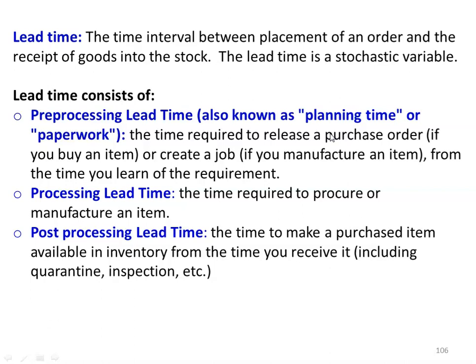Suppose you are a manufacturer, it is the time required to create a job order from the time you learn that there is a requirement. If you are in your factory or business and there is some requirement of a certain item, you are placing an order. The time gap between the release of the purchase order and the learning of your requirement is called pre-processing lead time.